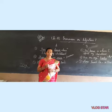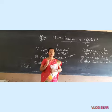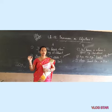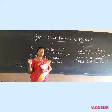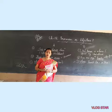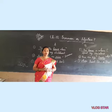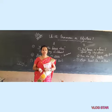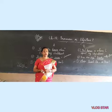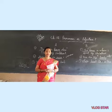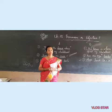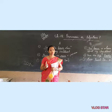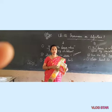Now, what is an adjective? An adjective is a word that is used to describe a noun or a pronoun. But there are certain words — few words — that are used both as a pronoun and as an adjective, like this, that, these, those. They are used as a pronoun, and there are many other words too.